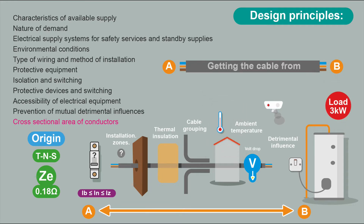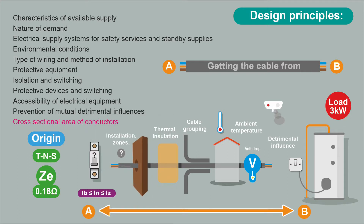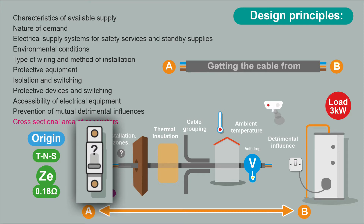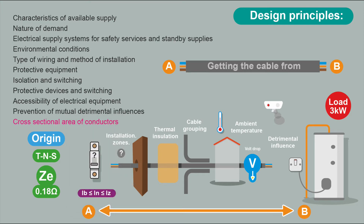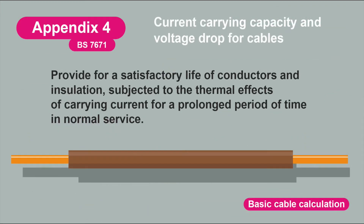We consider whether there are any environmental conditions which will affect our choice of cable, then we consider the type of cable and how it's going to be installed, safe working practices during installation, how to protect the circuits, and how people will interact with the equipment. Once we've considered all these points, we can start to calculate the size of cable we need — to provide a satisfactory life of the conductors and insulation subjected to the thermal effects of carrying current for a prolonged period. Basically, we don't want the cable to overheat.